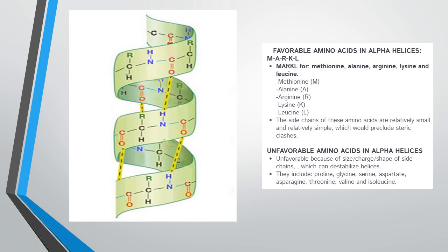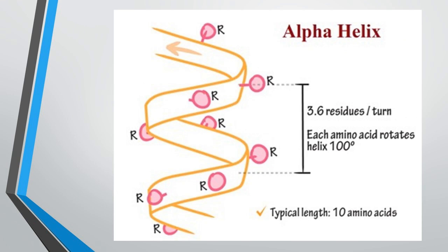In an alpha helix, all amino acid side chains face the outside of the helix because this is the most energetically stable arrangement.